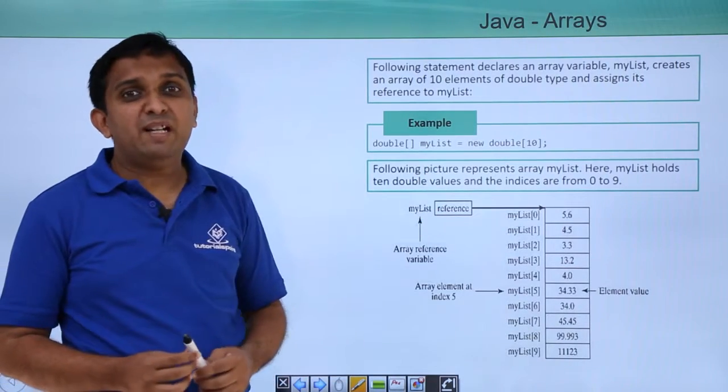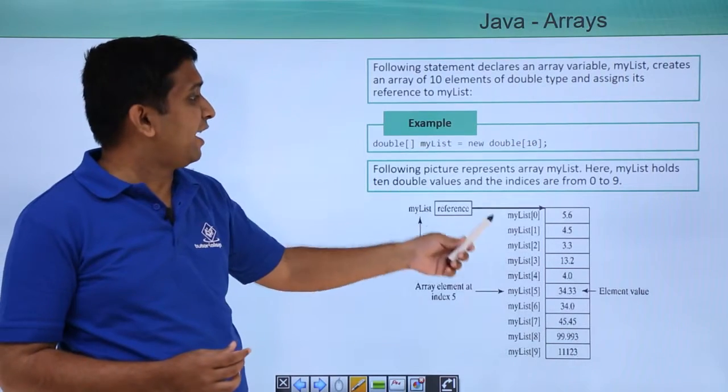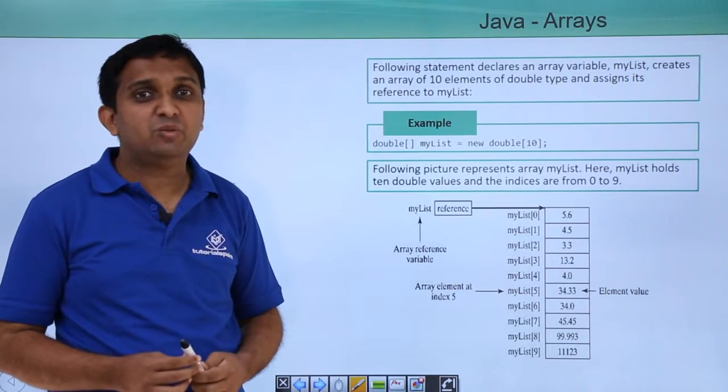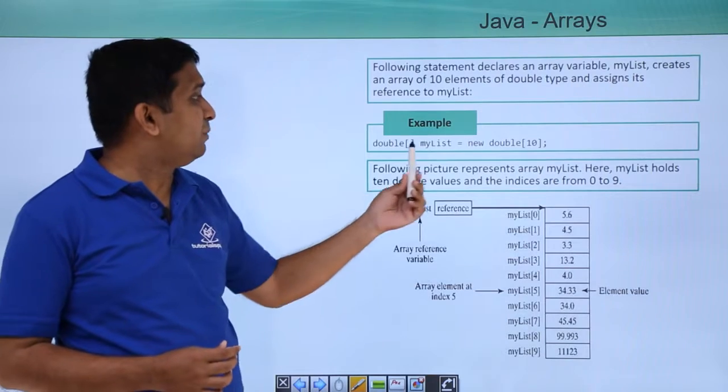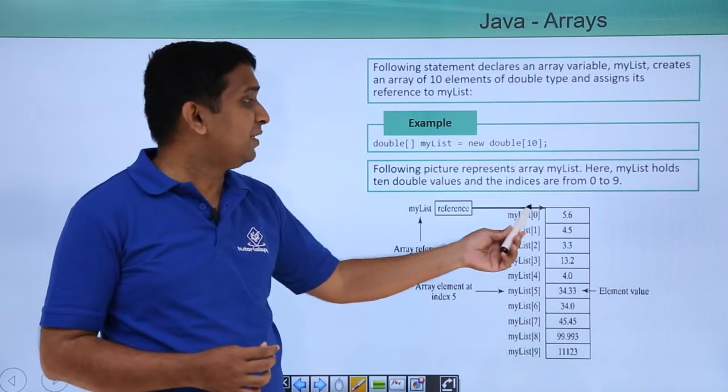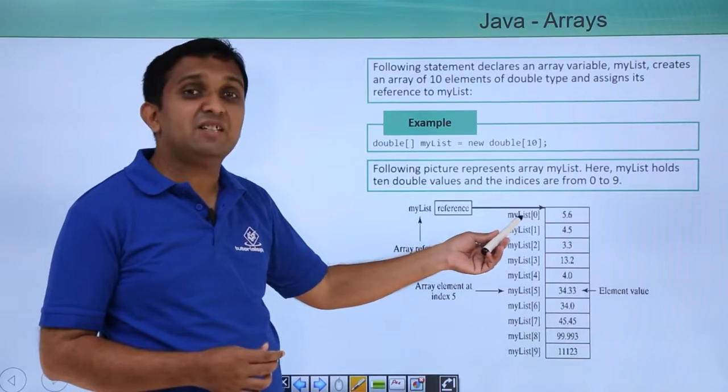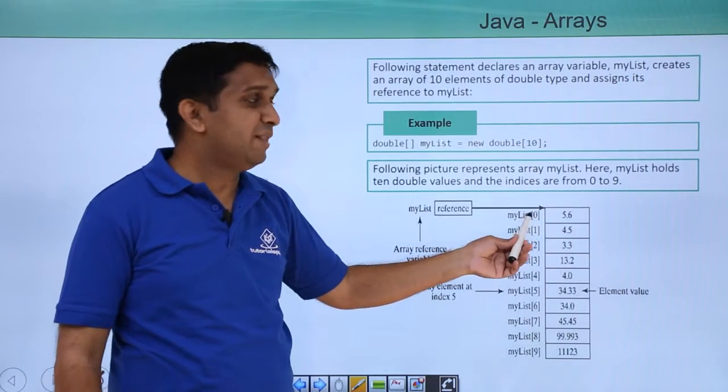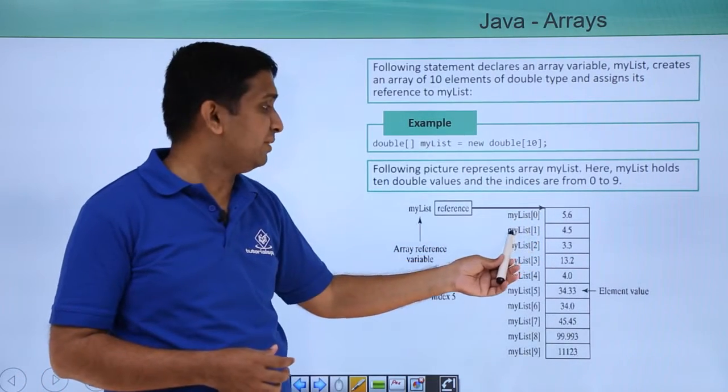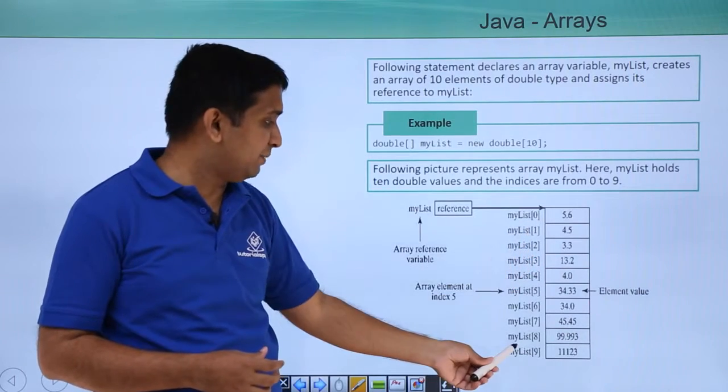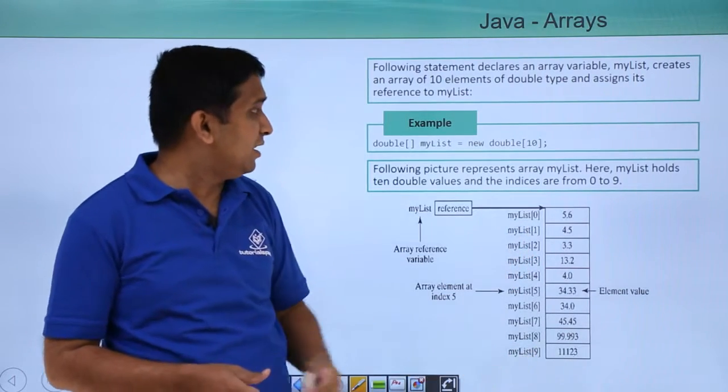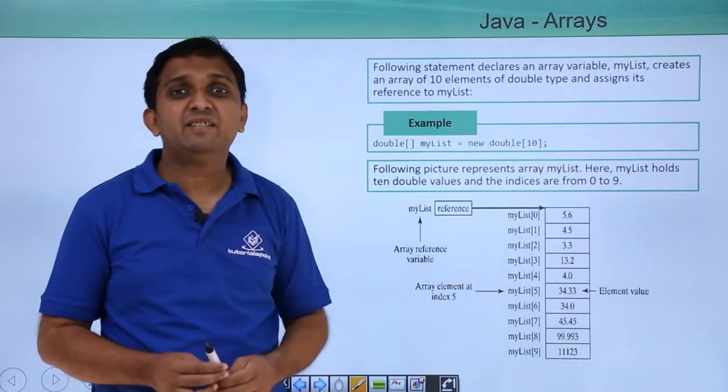One array is created of double elements, and the corresponding diagram is shown how the elements will be stored. The name of the reference is the starting point for that array, and the array index will start from 0. So the first element will be myList[0], then myList[1], and so on. The last element will be myList[9] since the array size is taken as 10.